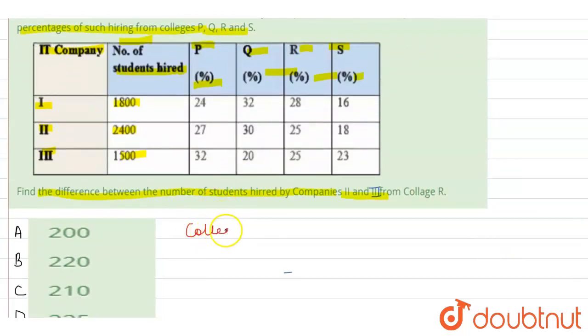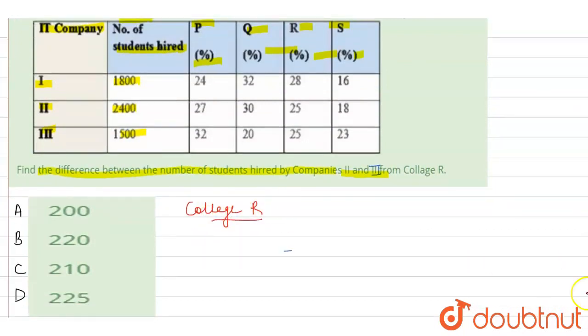So first of all, we are looking at the details of college R. We have college R here. First of all, we are looking at company 2.